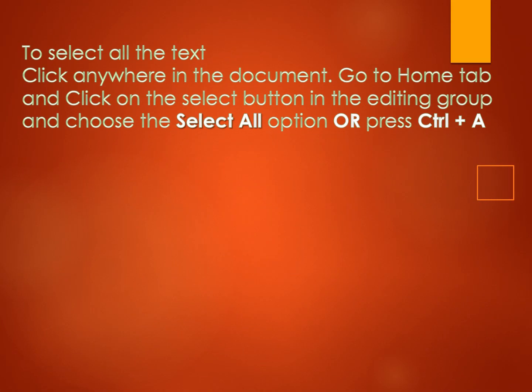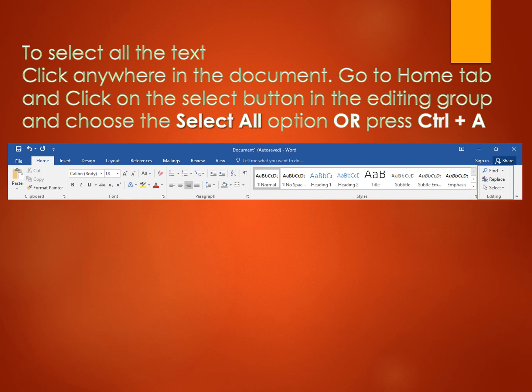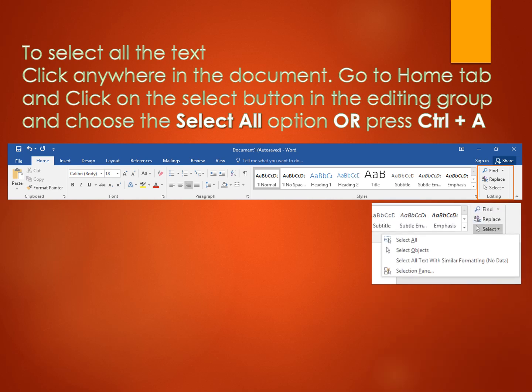To select all the text in the document, click anywhere in the document, go to the Home tab, click on the Select button in the Editing group, and choose the Select All option. Alternatively, press Control + A. In the image, you can see the Editing group on the extreme right. Click on Select, a drop-down menu will appear, then choose Select All. You can also press and hold the Control key and press A to select all text.